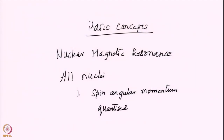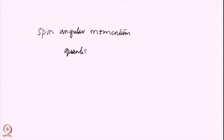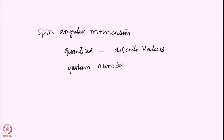The spin angular momentum is quantized, meaning it can only take discrete values. It can have various values indicated by a quantum number — the spin angular momentum quantum number — and it can take values 0, 1/2, 1, 3/2, and so on.